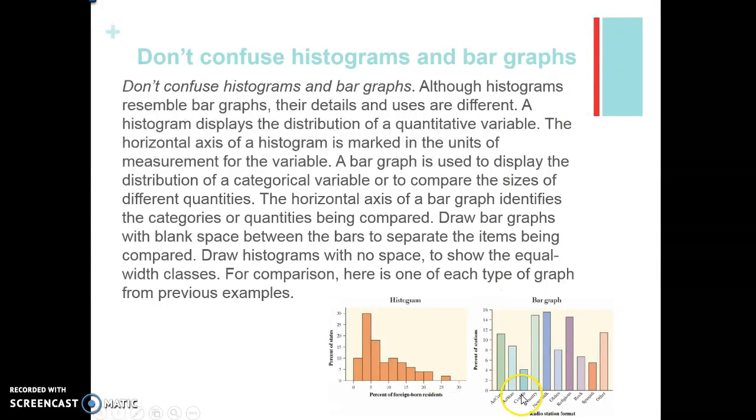Histograms are taking a look at distributions of quantitative variables. Bar graphs are specifically categorical variables. The horizontal axis of a bar graph identifies the categories or quantities being compared - like your bins, what were the labels of your bins. A histogram is putting the counts within each bin.